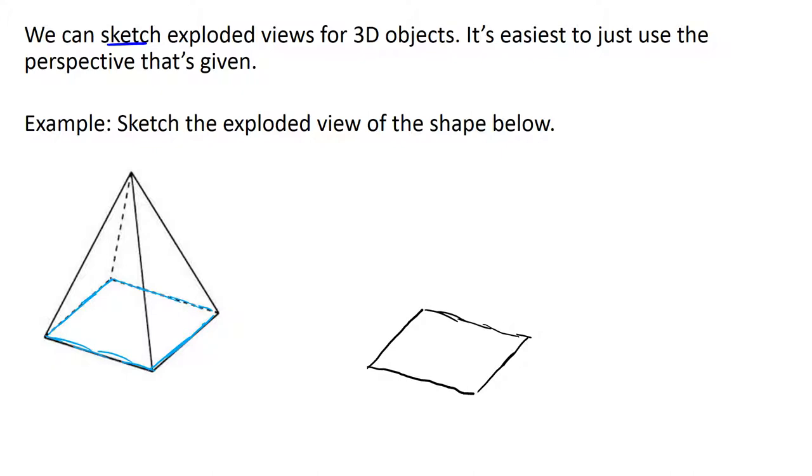Now what I'm going to imagine doing is peeling off each side. So this front triangle, I'm going to imagine pulling it back off the object. I'm going to pull it back this way, and what that's going to look like is - this side I'm just going to keep in that same orientation.